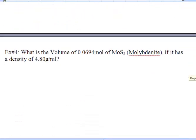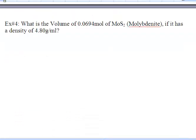And finally, our last question, what is the volume of 0.0694 moles of molybdenite if it has a density of 4.8 grams per liter? Well, first thing we're going to do is write down our formula for density. Density equals mass over volume. Now we've been given moles, so we need to convert into mass, so we're going to find the molar mass of this.